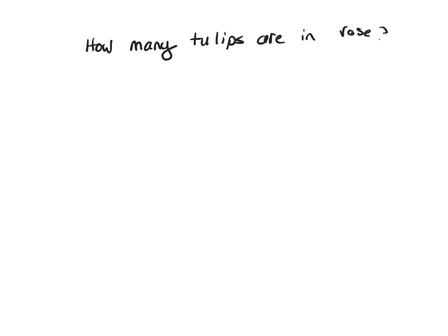We have a vase that's got roses and tulips in it, and we're trying to figure out how many tulips are in the vase. So look at clue one.